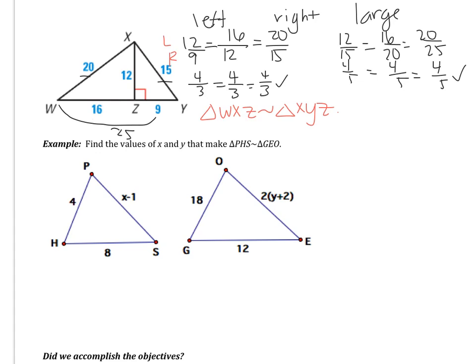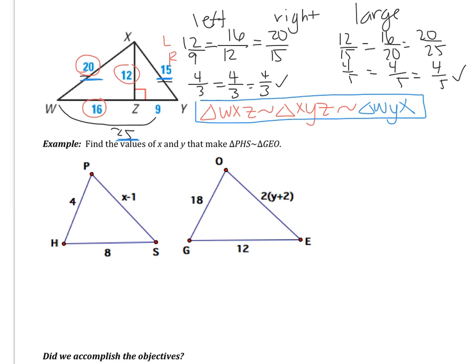I can add on the similarity statement for the large triangle. The left triangle went W, X, Z — that's large, small, medium. So on the big triangle I go large, small, medium, which is WYX. So the full similarity statement extends to include triangle WYX. Hopefully that wasn't too confusing — if it was, please let me know in class so I can go over it again.